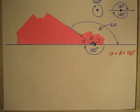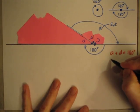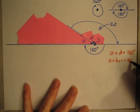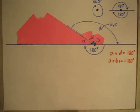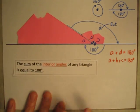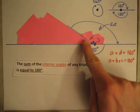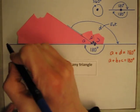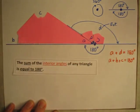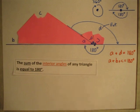When I line all three of them up — angle A, angle B, and angle C — together they form a straight line, so they add up to 180 degrees. Angle A plus B plus C equals 180 degrees. The theorem is: the sum of the interior angles of any triangle is equal to 180 degrees.